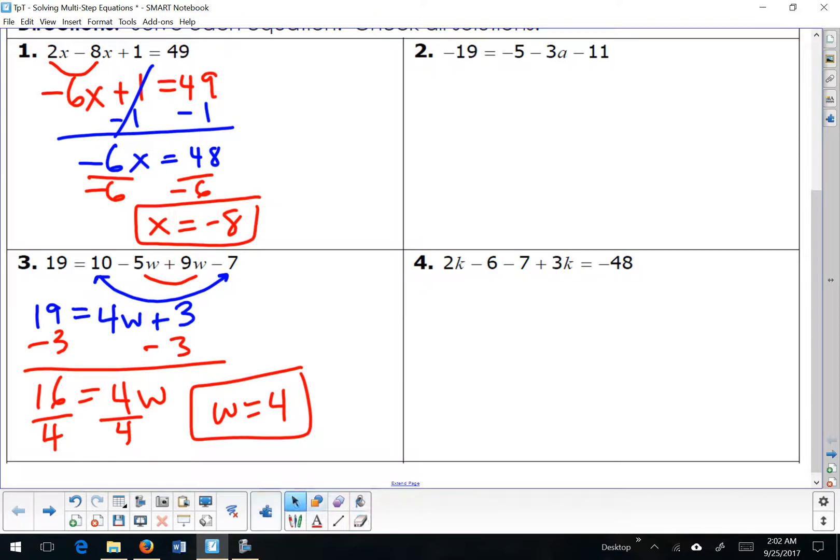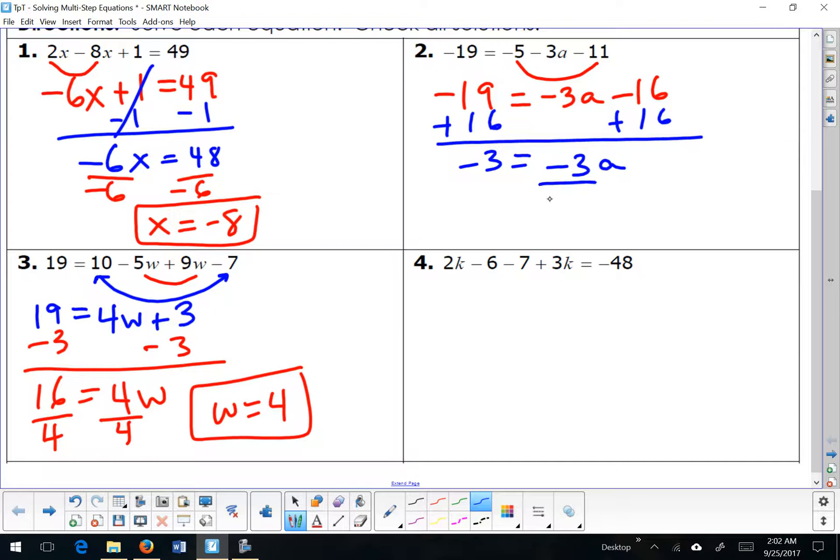Hopefully you gave these a try on your own. Make sure you're writing everything down in your packet so that you have some examples to look at when it's your turn to work independently. So question number 2. My like terms are my constants. Negative 19 stays the same. Negative 3a stays the same. But negative 5 and negative 11 make negative 16. Clear my constants, divide by my coefficients and complete.